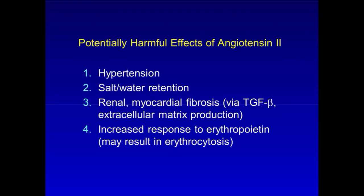A2 can also contribute to renal and myocardial fibrosis via the action of growth factors such as TGF-beta and via increased extracellular matrix production. And by its effect on EPO, it can actually result in overproduction of red cells or erythrocytosis, which in some situations can have harmful effects.